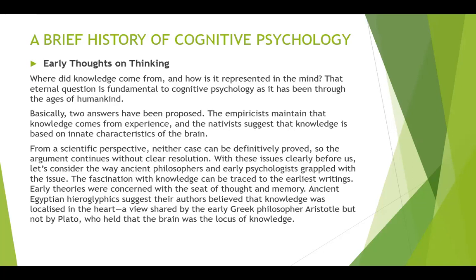The fascination with knowledge can be traced to the earliest writings. Early theories were concerned with the seat of thought and memory. Ancient Egyptian hieroglyphics suggest that authors believed knowledge was localized in the heart — a view shared by the early Greek philosopher Aristotle, but not by Plato, who held that the brain was the locus of knowledge.